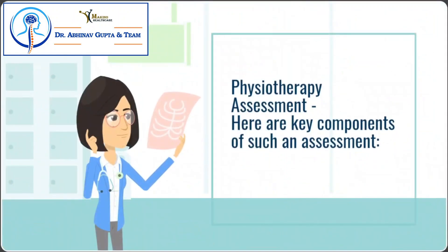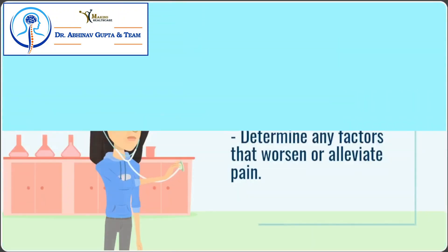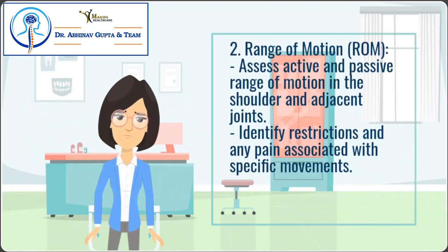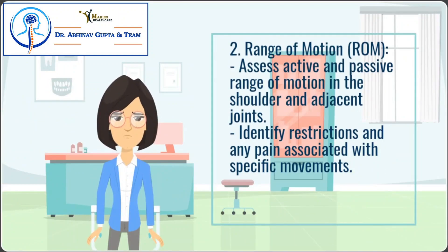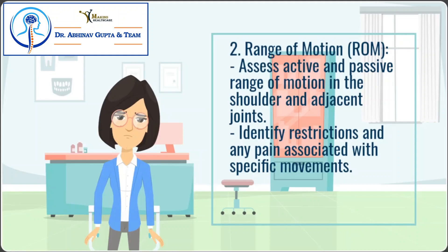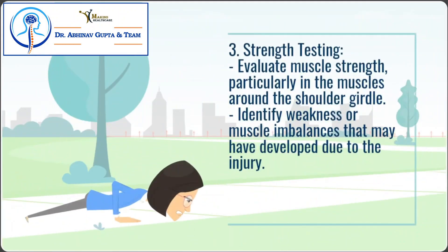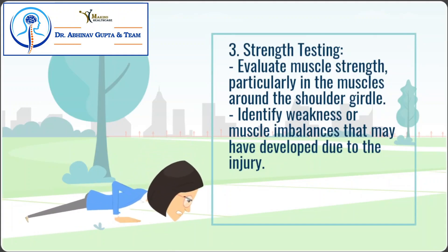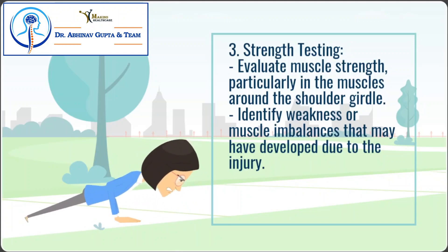Physiotherapy assessment: key components include pain assessment — evaluate the level and nature of pain experienced by the patient and determine any factors that worsen or alleviate pain. Range of motion: assess active and passive range of motion in the shoulder and adjacent joints, and identify restrictions and any pain associated with specific movements. Strength testing: evaluate muscle strength, particularly in the muscles around the shoulder girdle, and identify weakness or muscle imbalances that may have developed due to the injury.